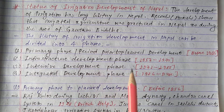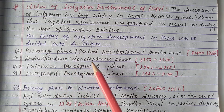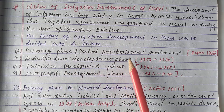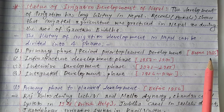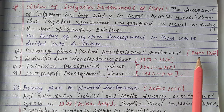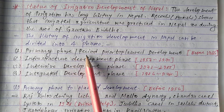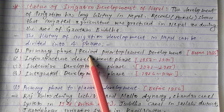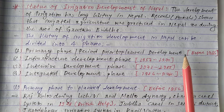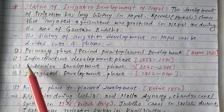Let's look at the time periods and examples of each phase. The first phase is the Primary Phase, also called the prior top-level development phase. Its time period is before 1956. This phase is called the Primary Phase because irrigation development was just beginning in Nepal in different places during this period.